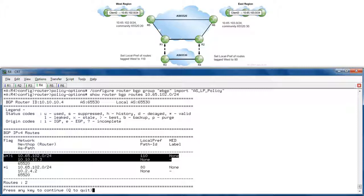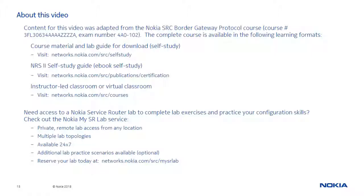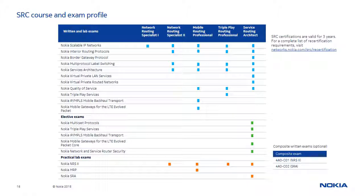And this concludes our video on BGP communities and local preference. Thanks for watching and see you next time. Content for this video was adapted from the Nokia SRC Border Gateway Protocol course. You can access the complete course via any of the three learning formats shown on this page, as well as get remote private access to a service router lab to complete the course lab exercises. If you are interested in obtaining an SRC certification, this table identifies the recommended courses and required exams for each of the five available certifications in the program.